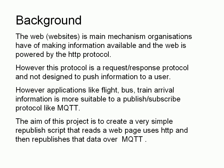Currently, the way people get information is to use the web, and the web uses the HTTP protocol. So if you want something like flight arrivals, bus arrivals, or train arrival information, you're going to be using HTTP to connect to a web server. However, some types of information like flight arrivals are more suitable to a publish-and-subscribe protocol like MQTT rather than the request-response protocol like HTTP. The aim of this video is to show you how to take a web page publishing using HTTP and republish that same data over MQTT, and receive that data using an MQTT client.